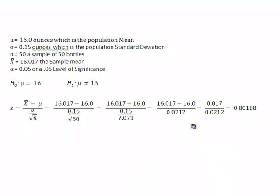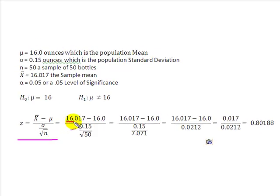So what I have shown you here is I took my original z-score formula and I dropped all my information in. X-bar 16.017 from here, mu 16 from here, population standard deviation from up here, n square root of 50 from here, and now I've simply solved.